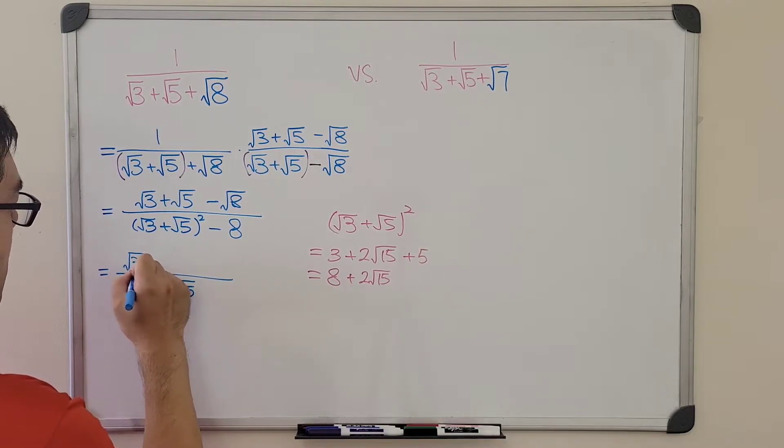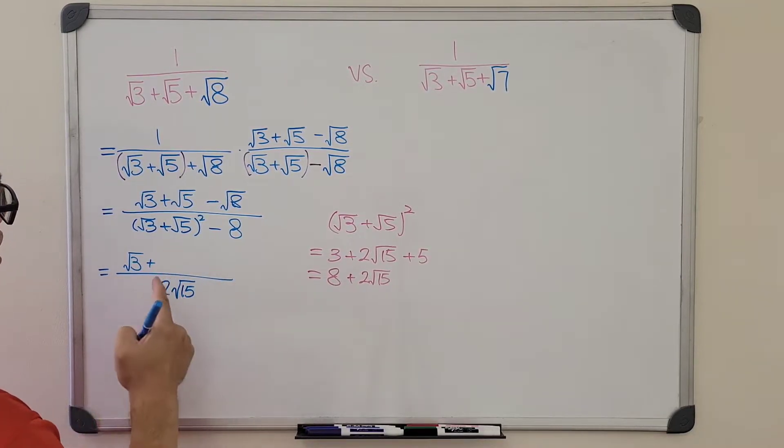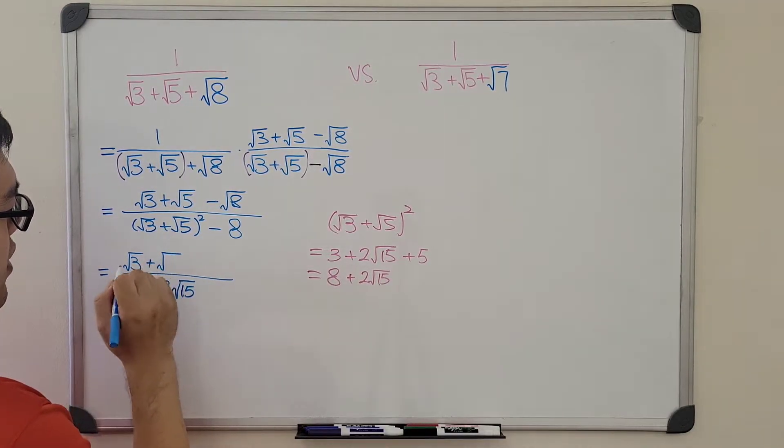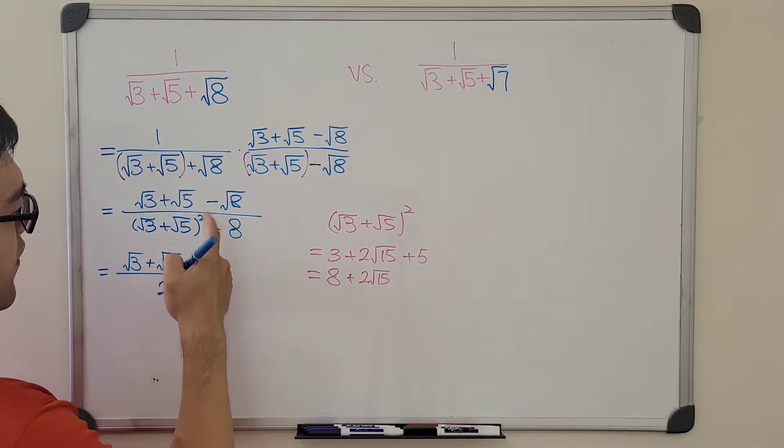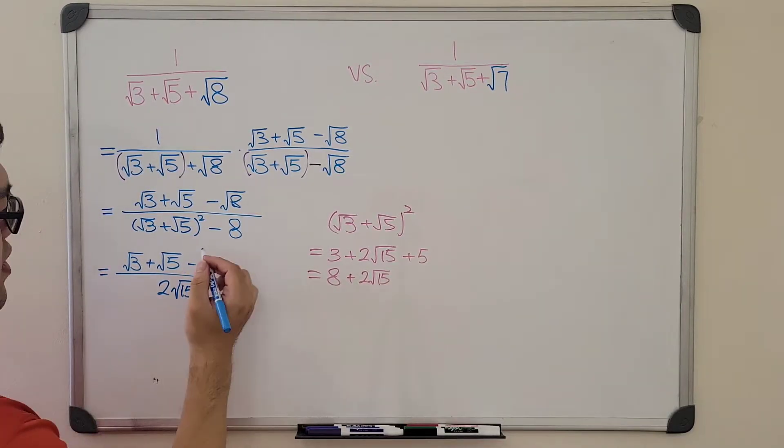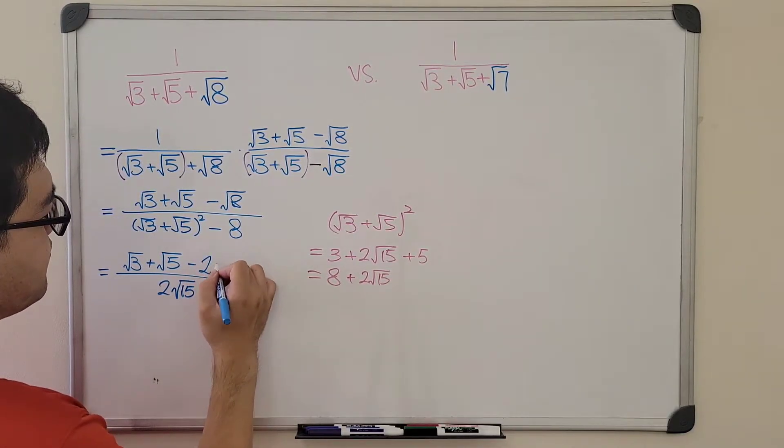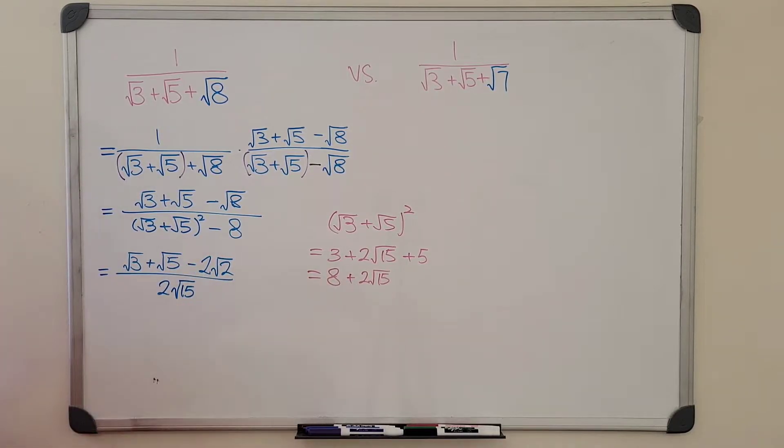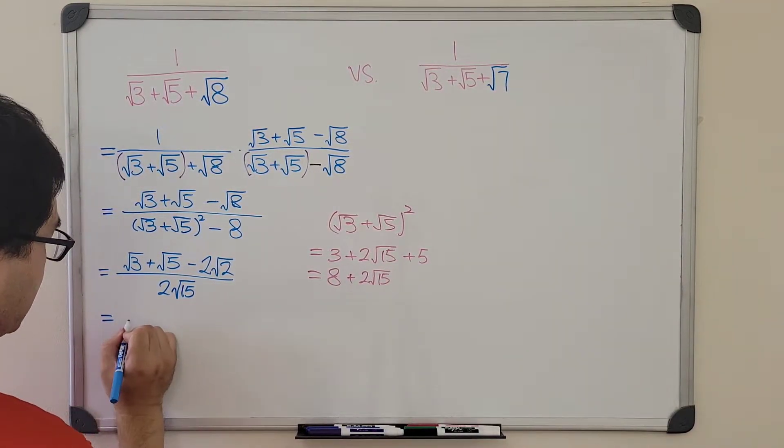Over the top, which is radical 3 plus radical 5 minus radical 8, and since we're trying to rationalize it, we're going to write as 2 radical 2. And last but not least, we still need to get rid of the radical 15 on the bottom.